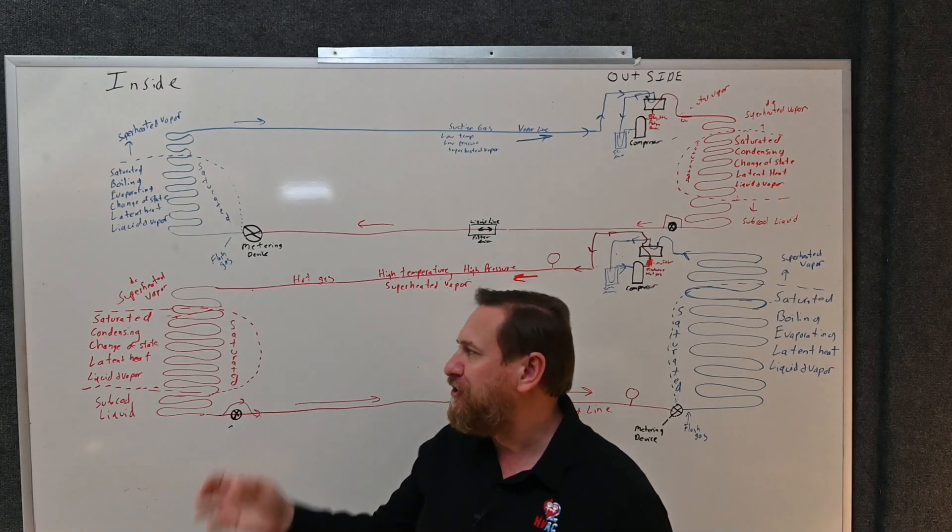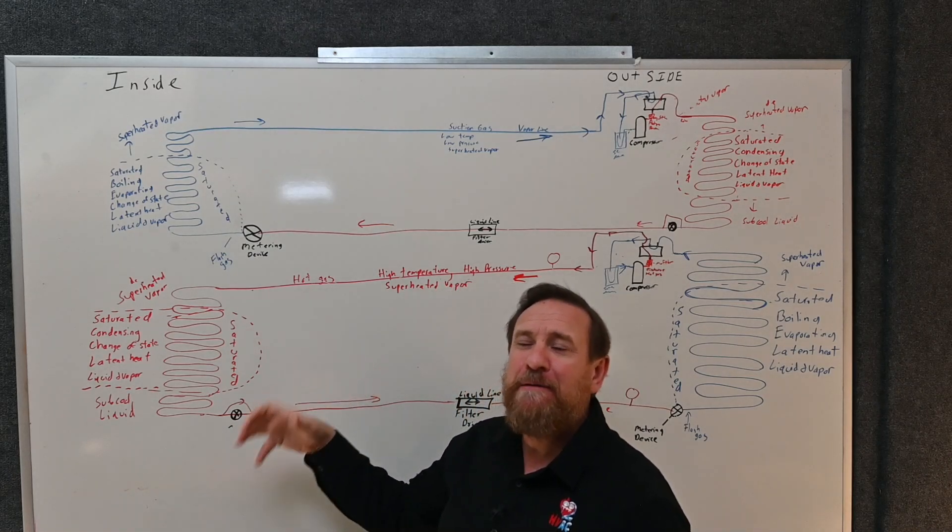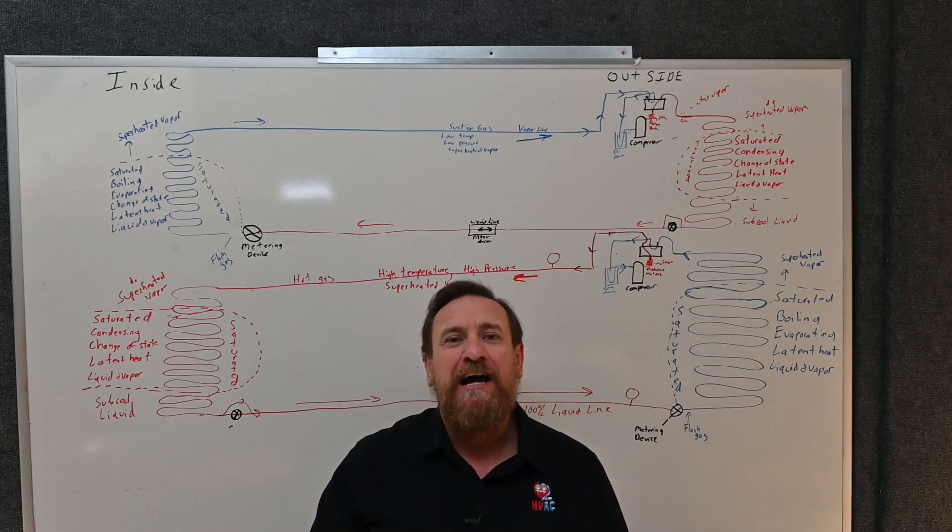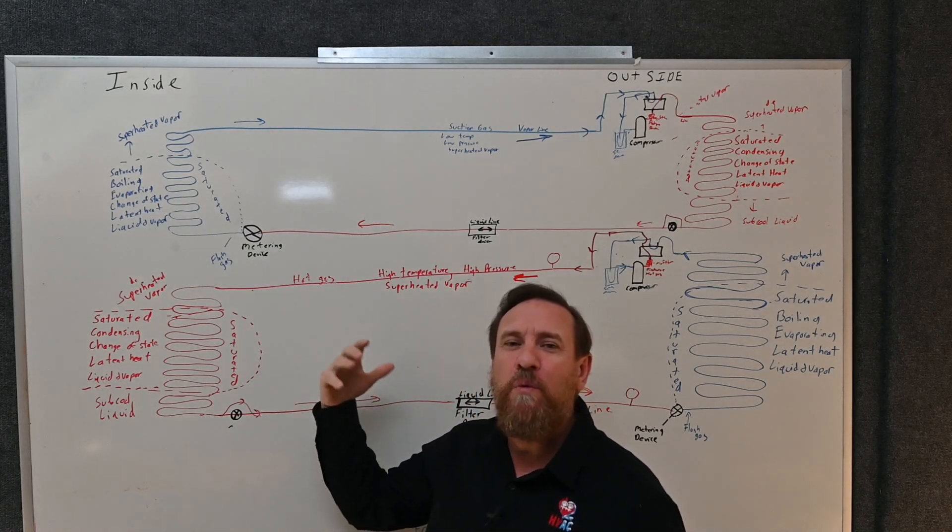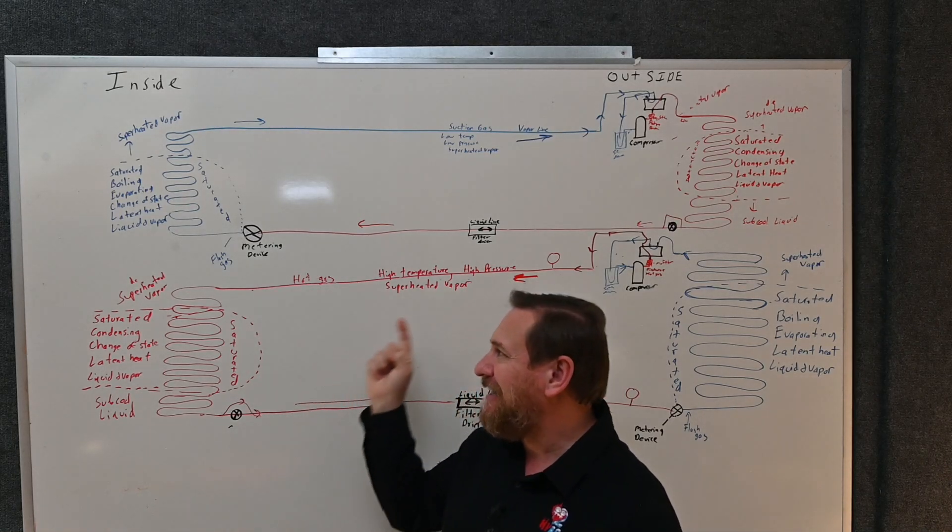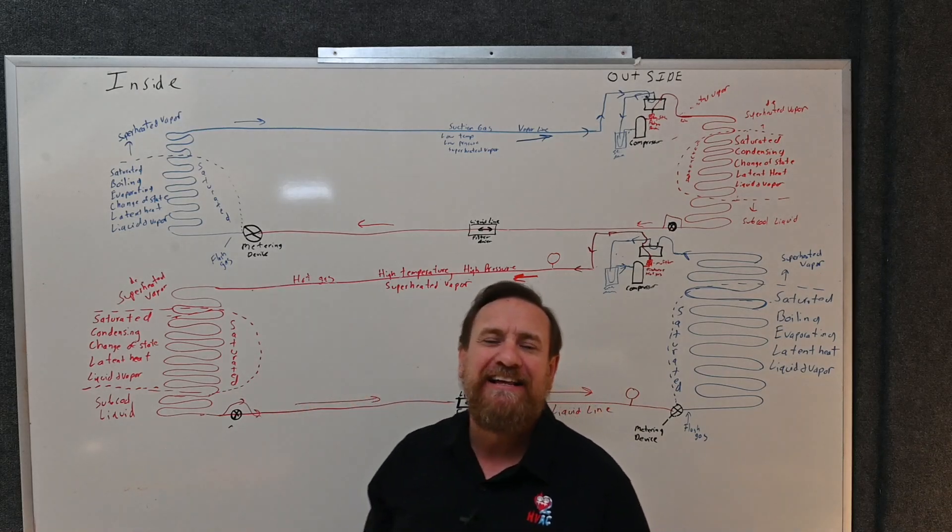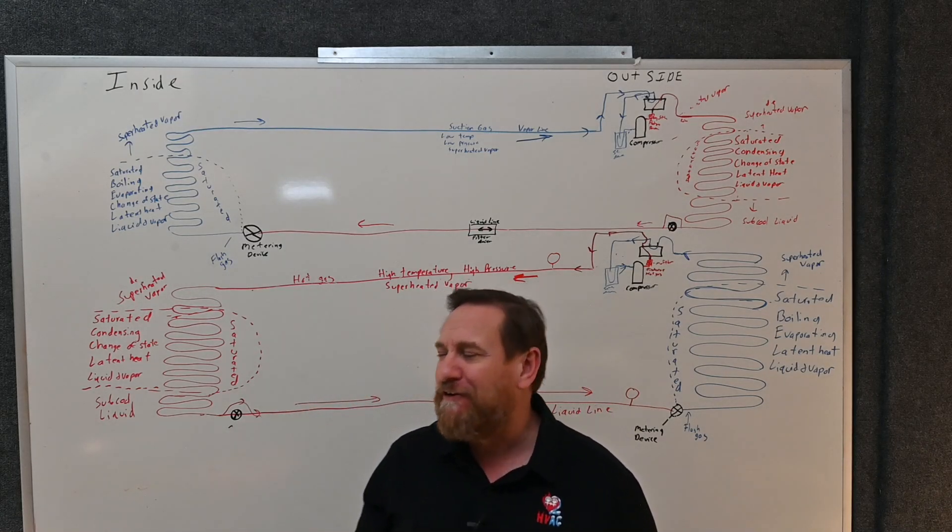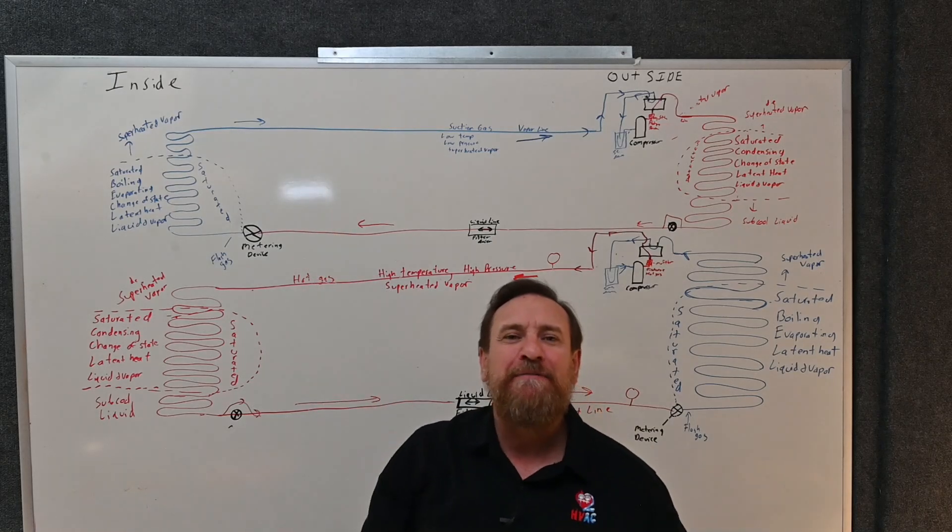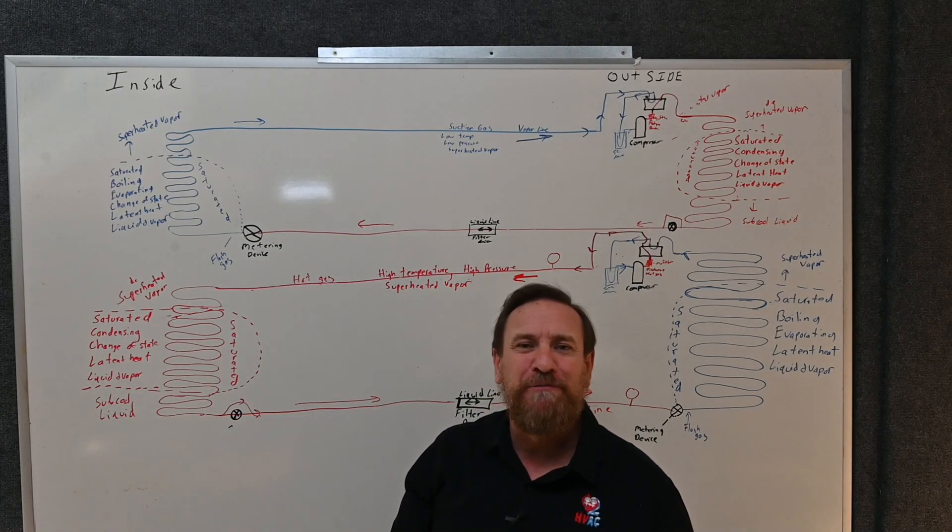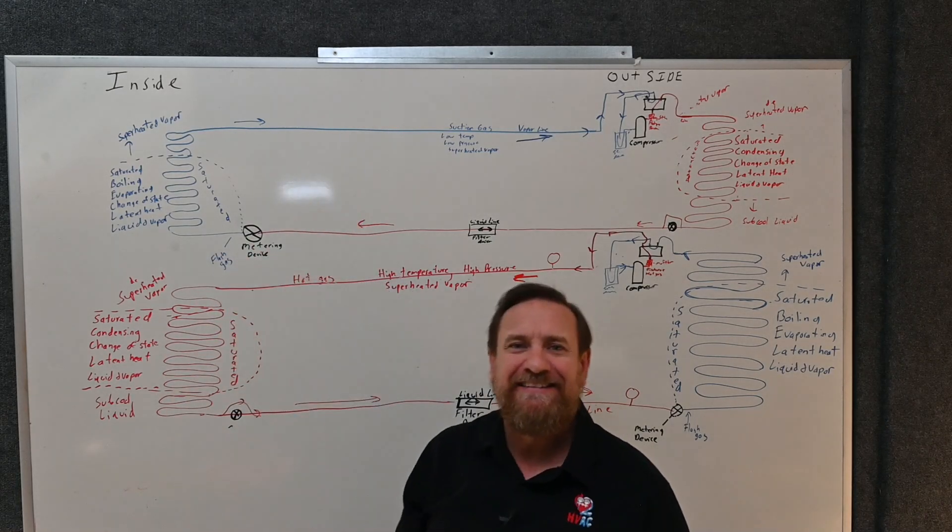It's always more difficult to charge the system in the heating mode because it needs less refrigerant. A lot of times it results in having to take all the charge out and then weigh that charge back in, taking into account the length of the line set. It can be much more difficult to charge that system in heating mode, which is why we want to make sure we use the correct manufacturer recommendations, the correct superheat and subcooling when we're charging in AC mode.